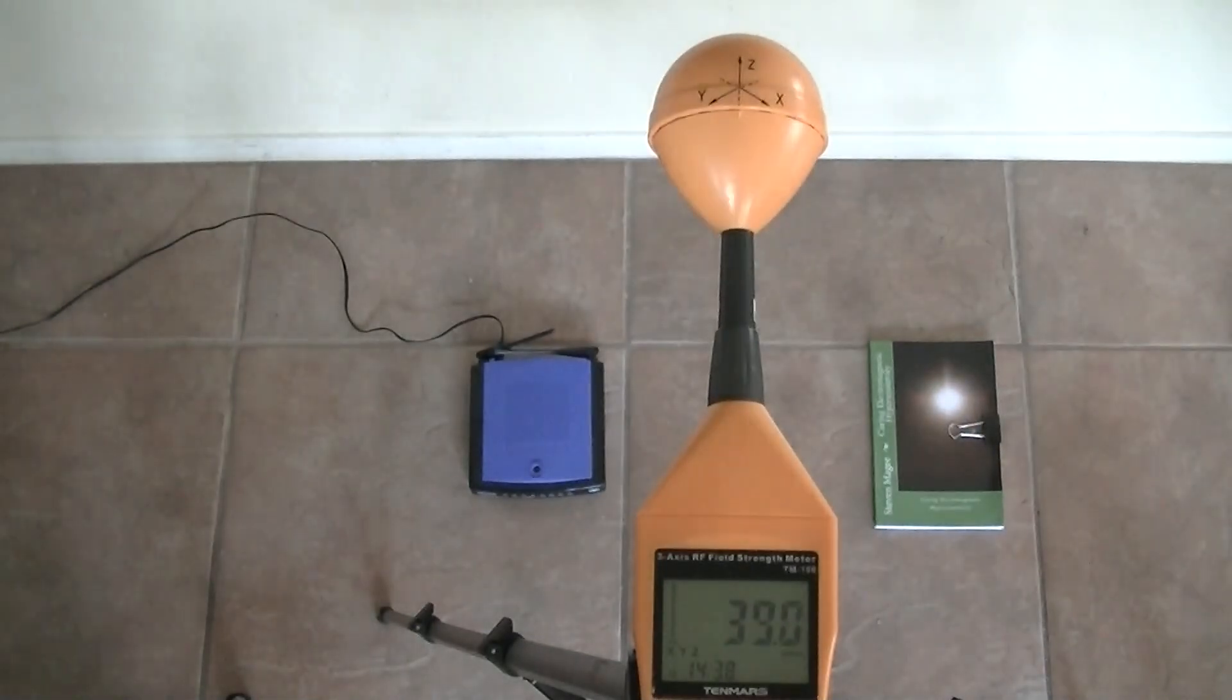So we have a radio frequency meter and that's currently reading the ambient background level right now, which is about 35 millivolts per meter.